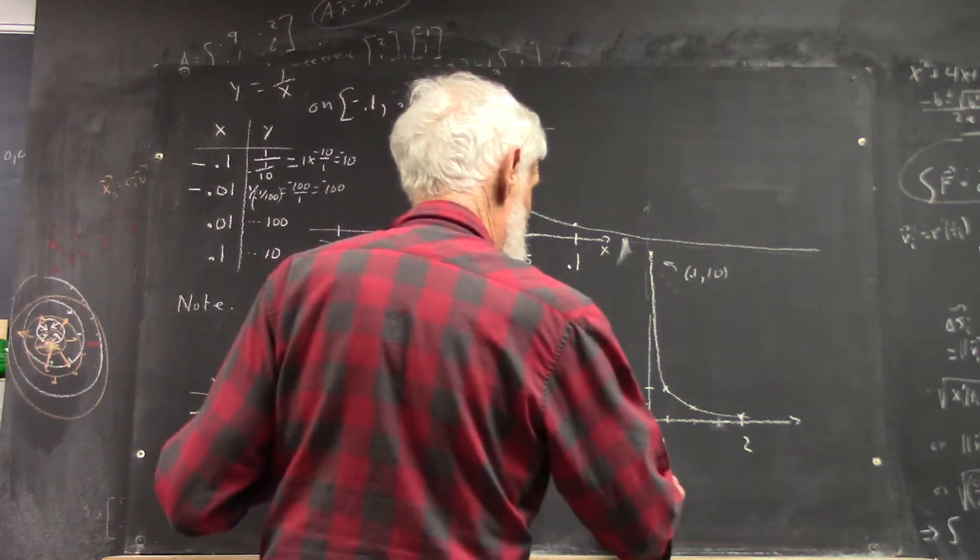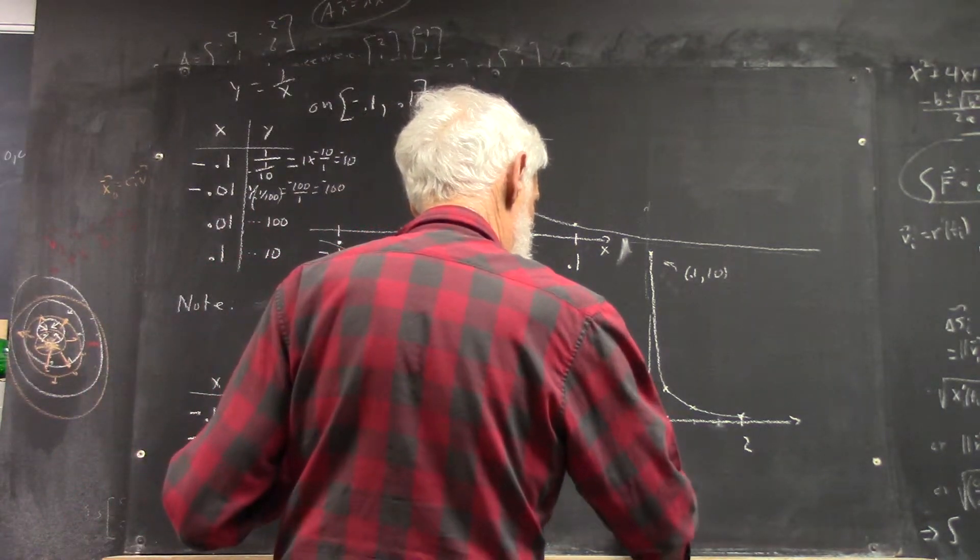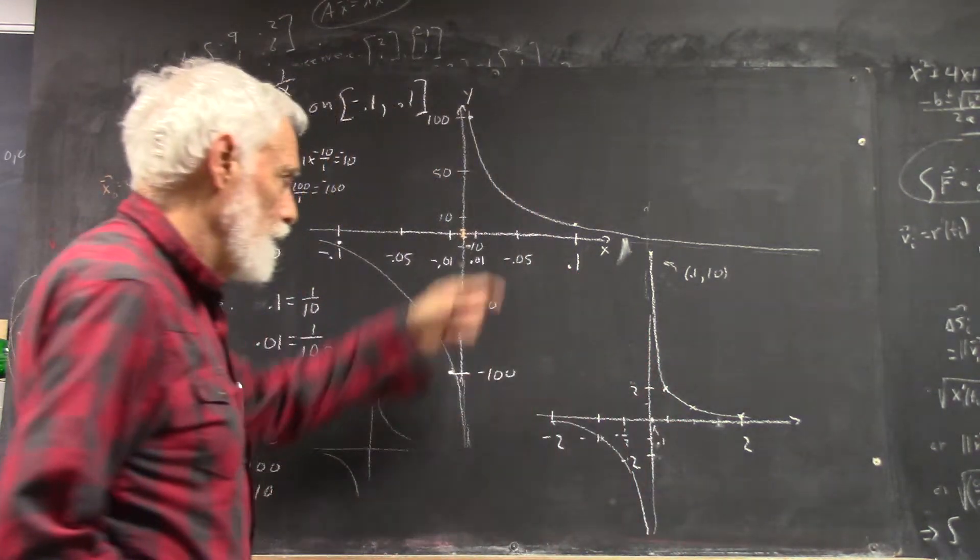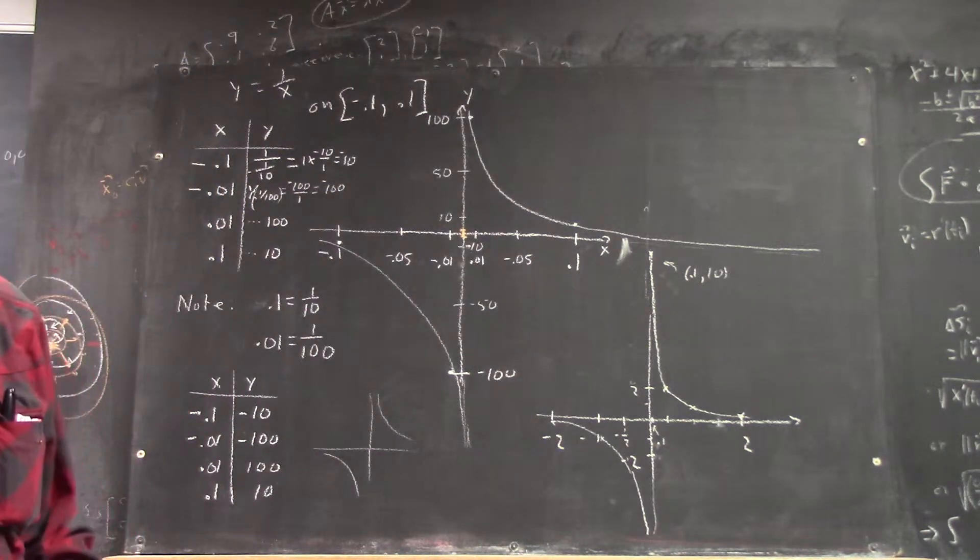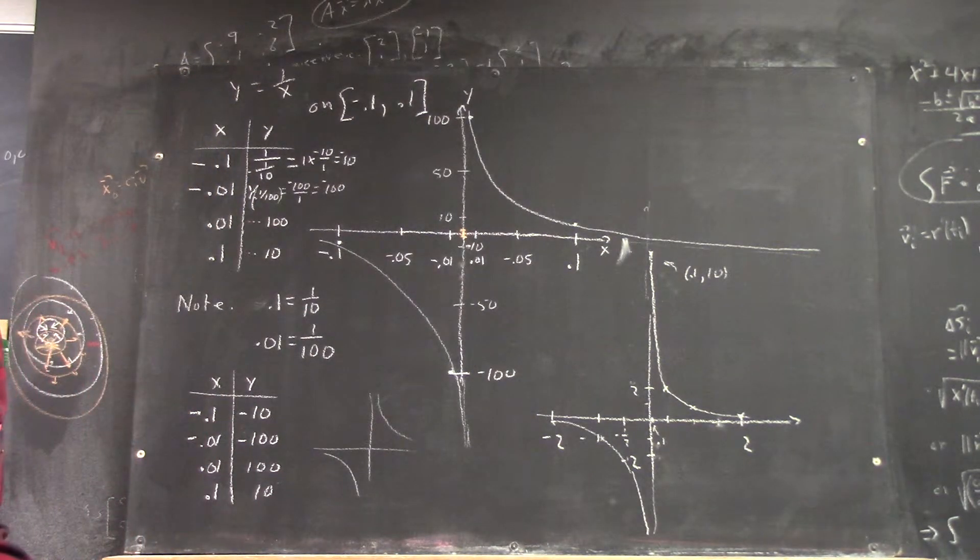Anybody understand, then, that on this side, well, it's going to do the same thing. It's got to go way down really fast. That doesn't even have room to get to negative 10 there. Make sense?